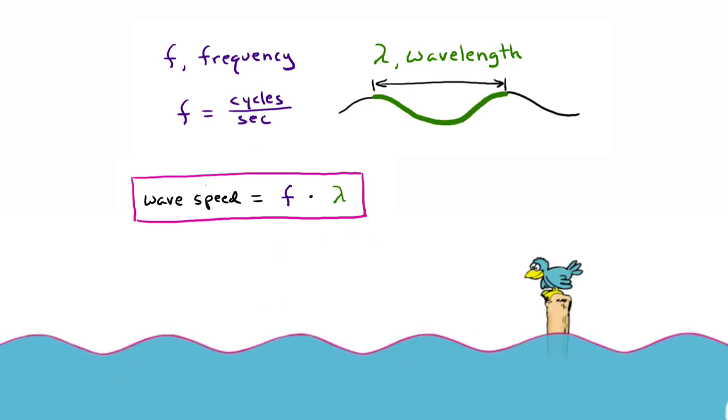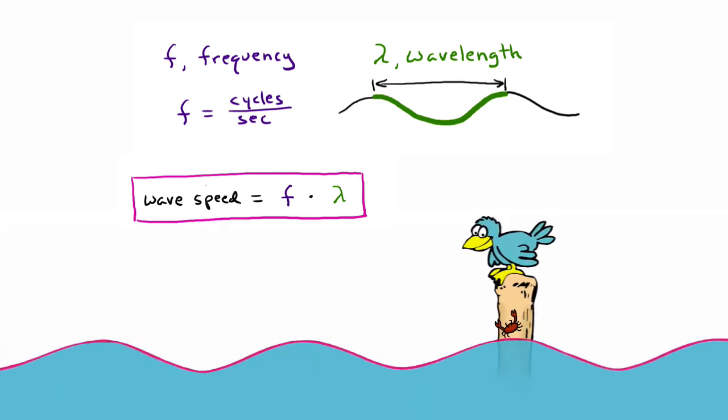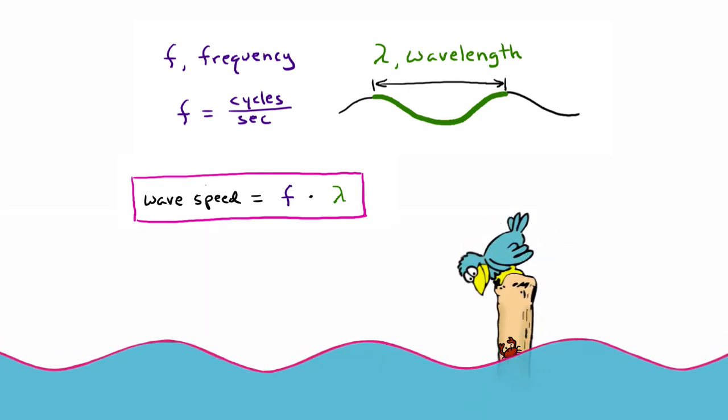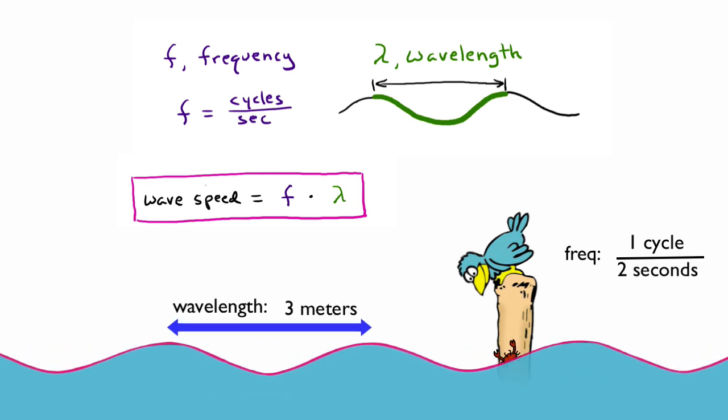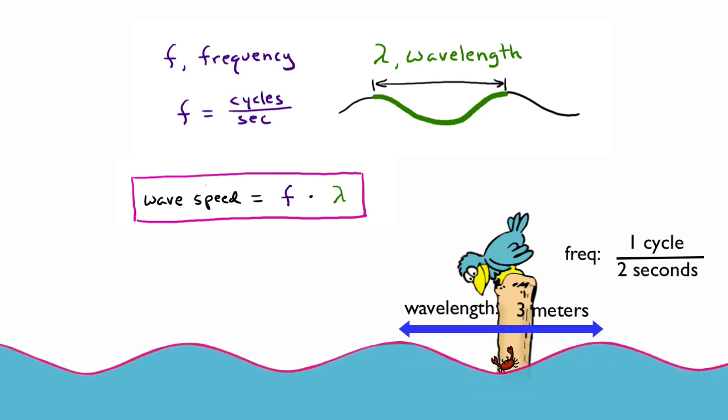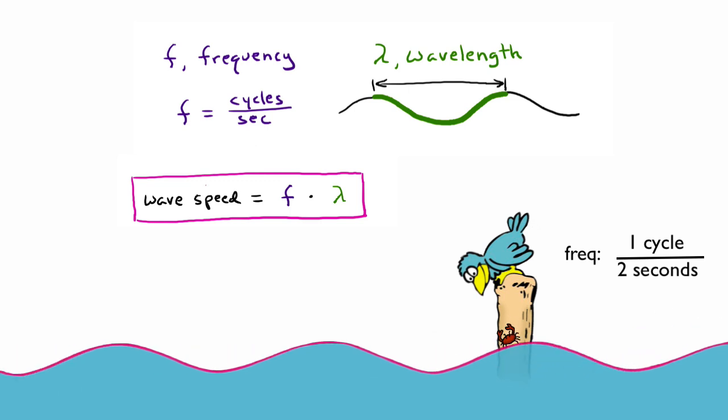Let's say a bird sees a delicious crab crawling up and down a post in time with the passing waves. The crab is going up and down once every two seconds. If the wavelength is, say, three meters, how fast are the waves traveling past the post?